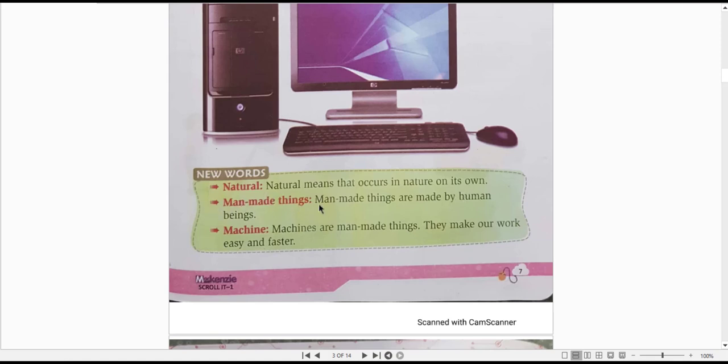Man-made things are made by human beings. Machine: machines are man-made things, they make our work easy and faster. Machines joh hai woh man-made thing hai aur ye hume kaam ko easy bana te hai aur jaldi kare leeti hai.